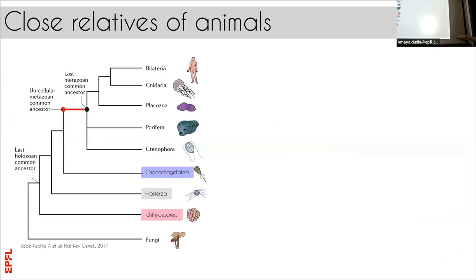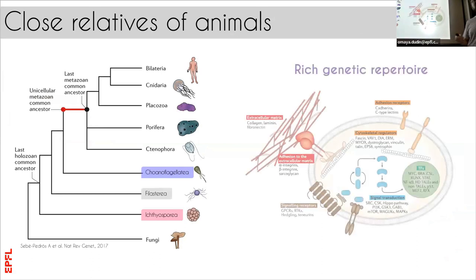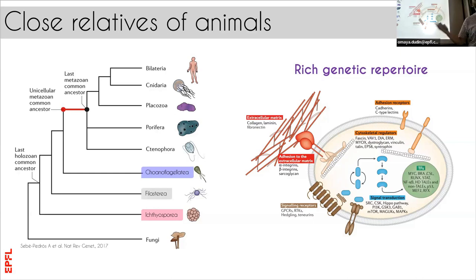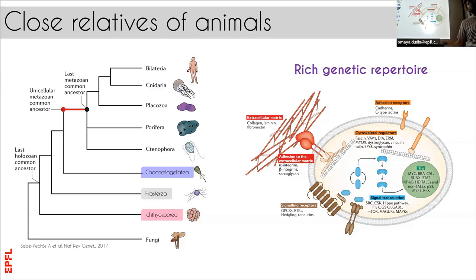There are three main groups supposed to be related to animals. What is cool about these species is that they have plenty of genes that were thought to be unique to animals. For instance, P53 — a major regulator of proliferation across all animals — is also found in these species, raising the question of what is the role of P53 in a unicellular context. There are also key regulators such as a regulator of cell division, as well as key adhesion factors such as cadherins, integrins — all of these giving us an opportunity to ask what the role of these proteins is in a unicellular function.